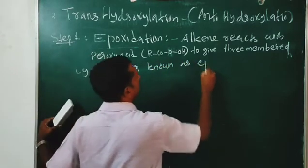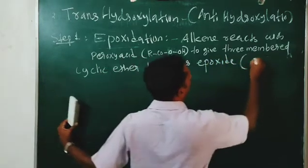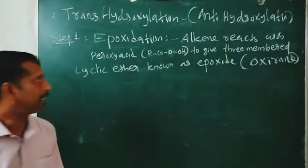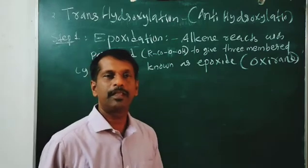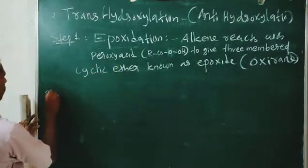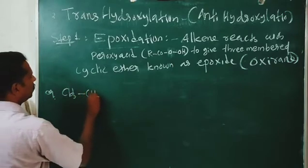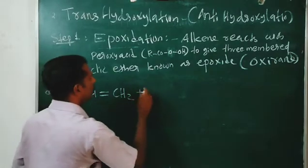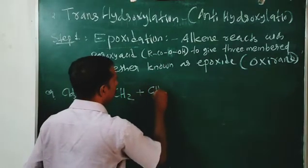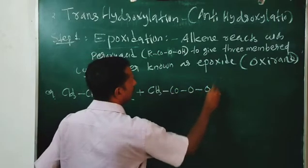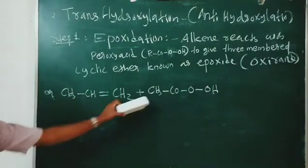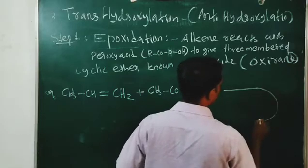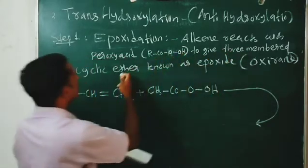The product is a three-membered cyclic ether, also known as oxirane. This reaction is known as epoxidation. Alkene reacts with peroxy acid. For example, CH3CH=CH2 reacts with peroxy acetic acid (CH3COOOH). The product is an epoxide: a three-membered cyclic ether with CH3, CH, and CH2 linked by an oxygen bridge. This epoxide is also known as oxirane.